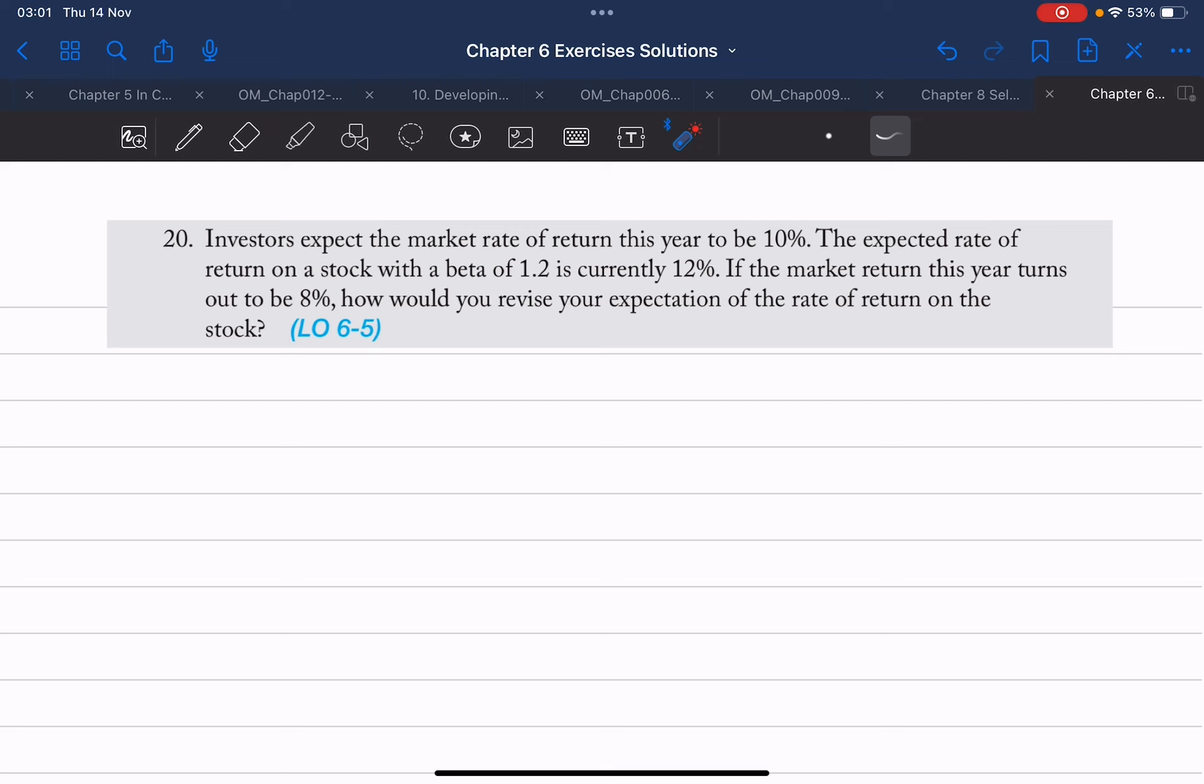Okay, what does it say? It says investors expect the market rate of return this year to be 10%. The expected rate of return on a stock with a beta of 1.2 is currently 12%.